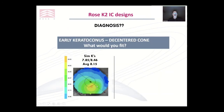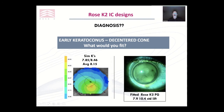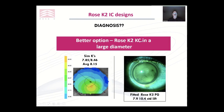Finally, this is a very early cone — average K of 8.15. The practitioner decided because of the decentration to use the PG design. We might have this wide apical touch, not too bad on the base curve, but much too tight in the periphery. I would have stuck with the KC design in about a 10.4 diameter — I think it would have fitted this cone better than the PG design.